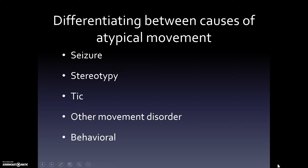This is part two of the presentation on seizures and autism, and we are just about to look at several videos that illustrate different causes of atypical movement, including seizures, stereotypy, tic, other movement disorders, and behavioral.